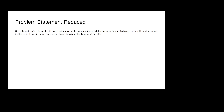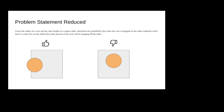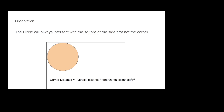For example, the coin on the left has a portion hanging off, making it easy to pick up, while the coin on the right is in the middle and hard to pick up. A key observation is that the circle will always intersect the square at the side, not the corner — because the distance from the center to the corner is sqrt(d_vertical^2 + d_horizontal^2), which is always greater than R.